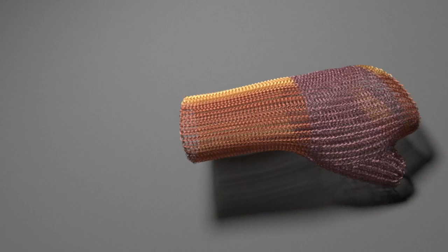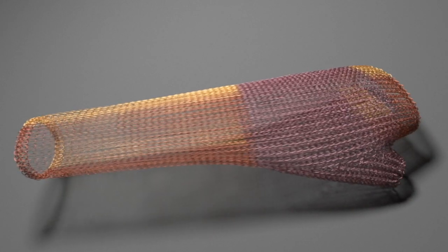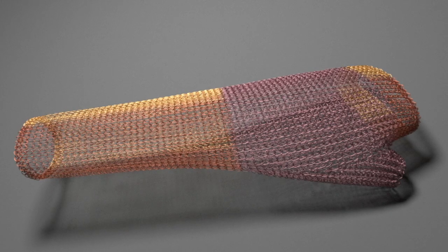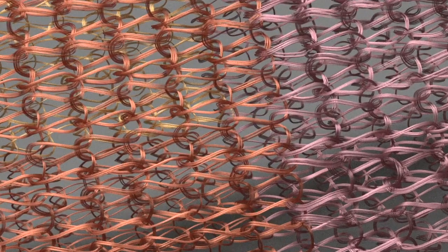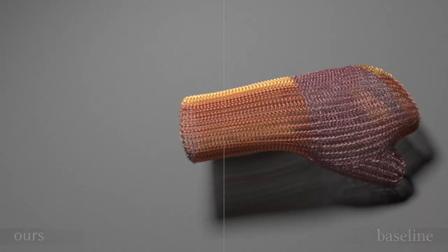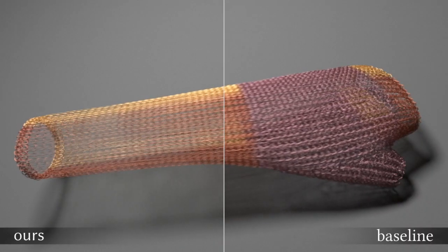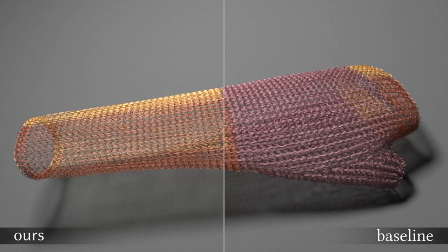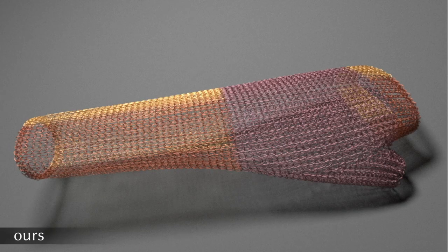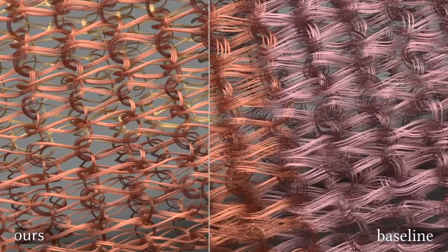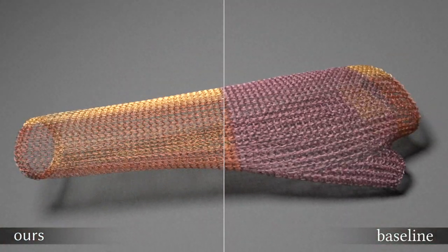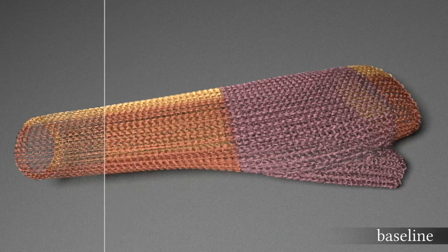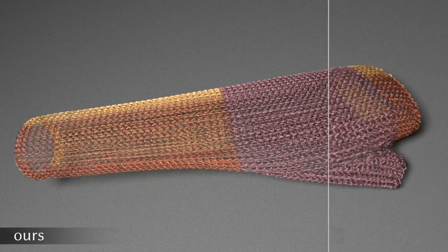This example contains a three-dimensional knitted glove model. When stretched from both ends, the glove appearance changes prominently due to the rearrangement of yarns and fibers. Please note the macro scale appearance differences in both colors and highlights between our model and the baseline.